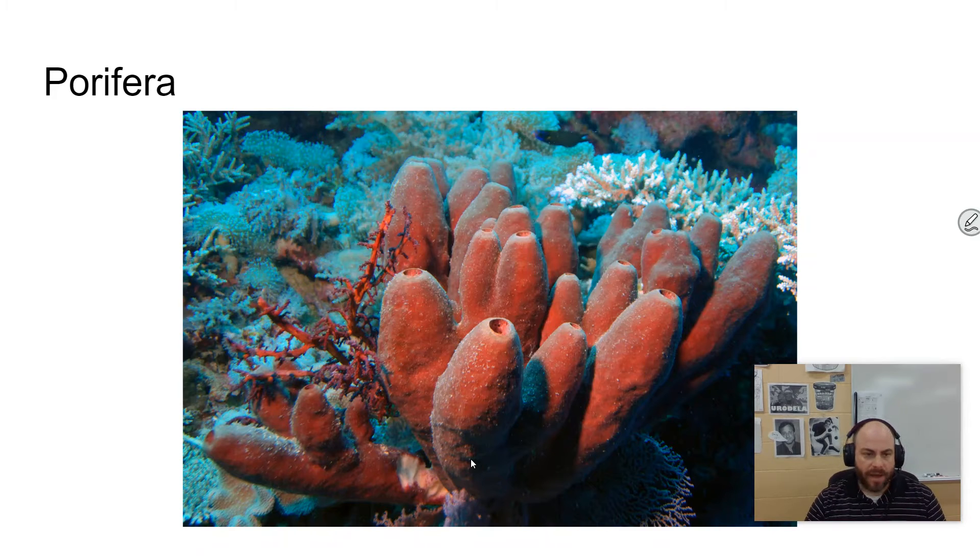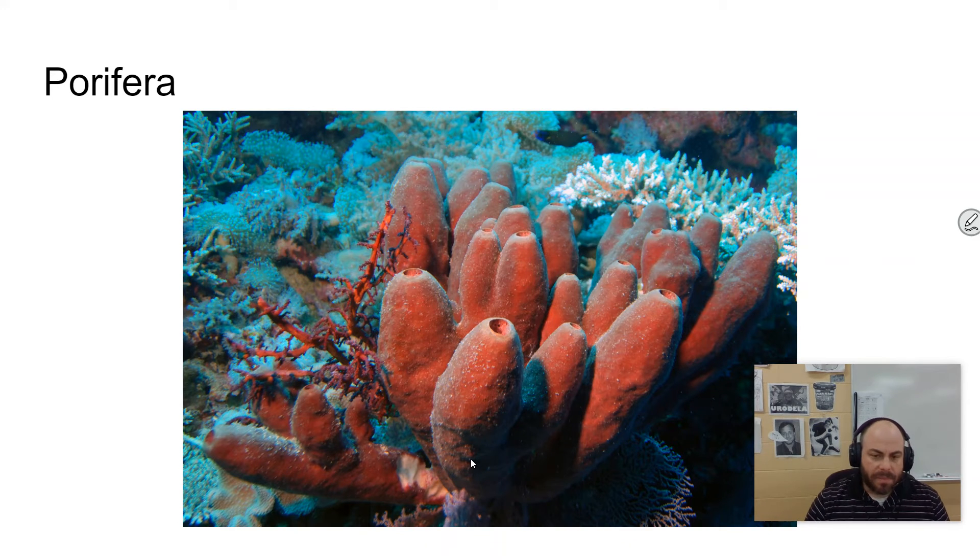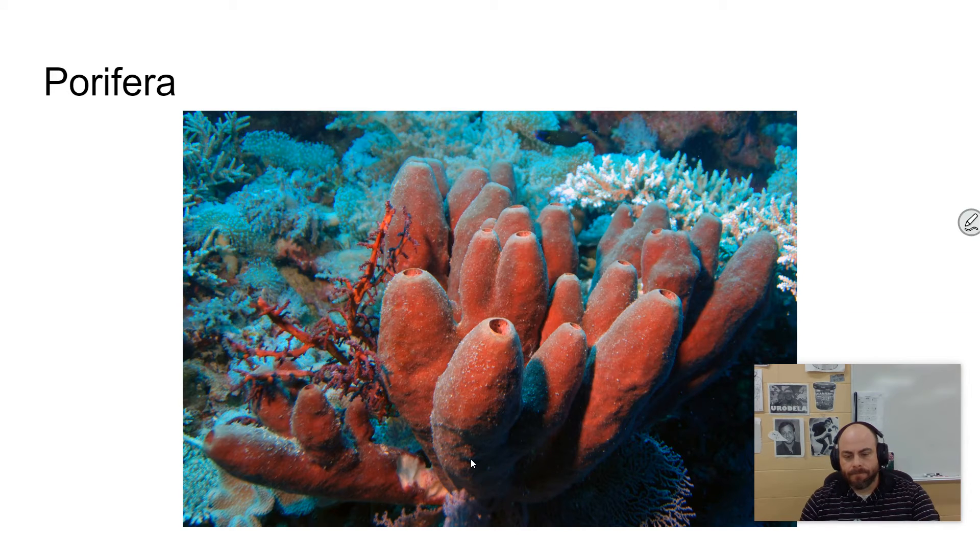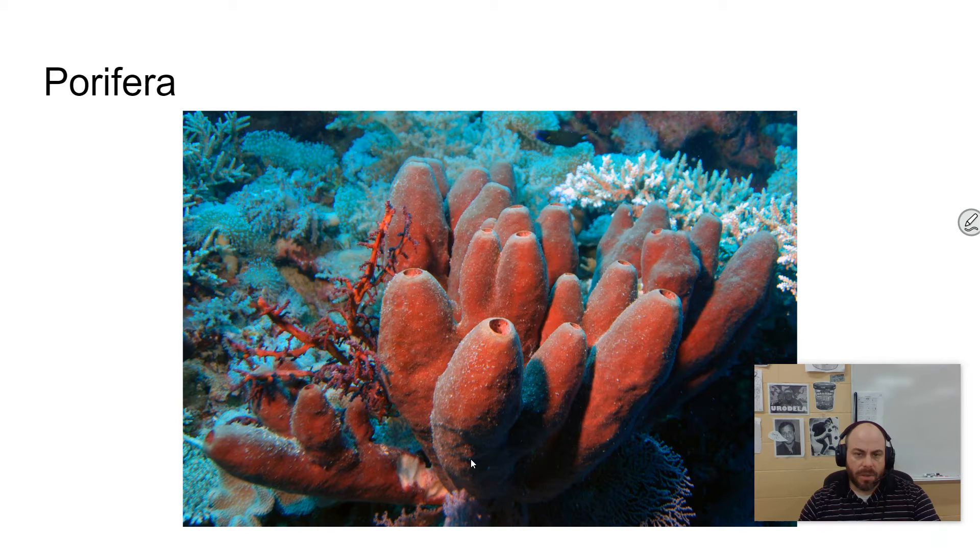Alright, so a little bit more about the phylum Porifera. This is the simplest kind of animal. So when we talk about sponges, they only share the most basic animal characteristics with all other animals. And they are multicellular, they're eukaryotic, they're heterotrophic, and they have cells without cell walls. That is pretty much the only characteristics that sponges have in common with all other animals.